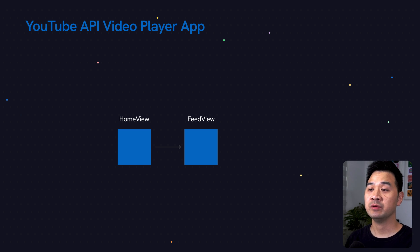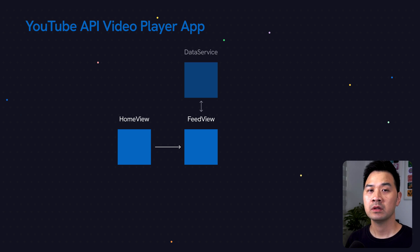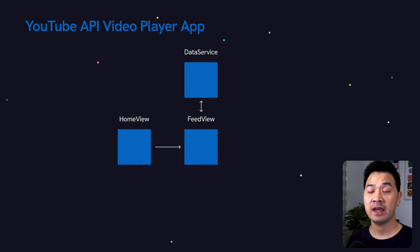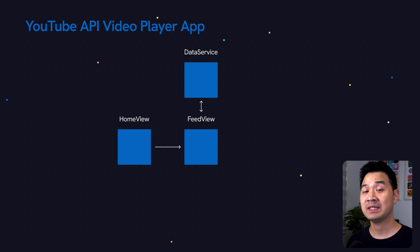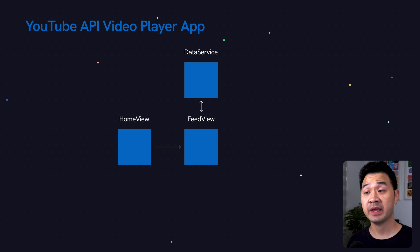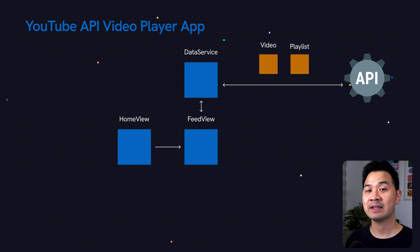Now let's talk about how the feed view is going to get the data. We're going to create a separate component — let's call that the data service — that is going to be responsible for all of the code that interacts with the YouTube Data API. The reason for this is so that we can keep it all in one place, making it easier to maintain, troubleshoot, and debug. So when the feed view loads, it's going to ask the data service for the list of videos to display.